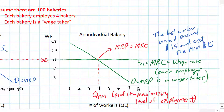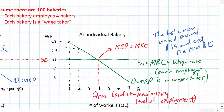So why hire that worker? Let's look at some other possible levels of employment. If this bakery were only employing one worker, and that one worker earned the bakery $25 in revenues, then it was definitely a good idea to hire that worker. The second worker's marginal revenue product was higher than the cost of hiring that worker at about $22, so it was a good idea to hire that worker.